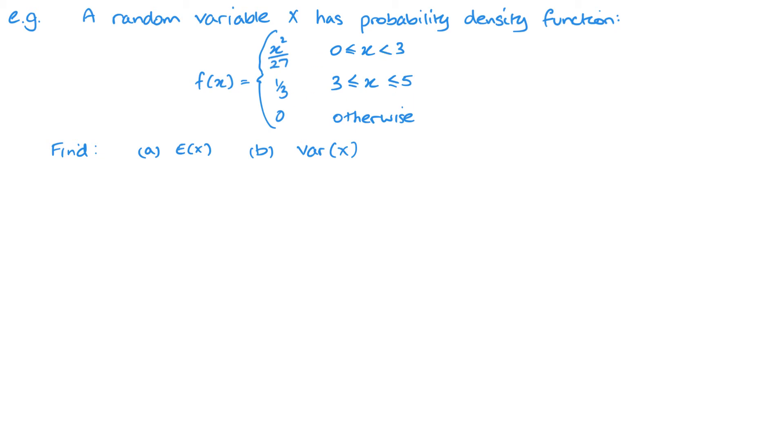Now final example. I wanted to make sure that I did a piecewise function so that you knew what to do when you had your two separate functions, and it is actually very straightforward. If I want to find my E of x, my expected value, my mean, all I need to do is integrate, but also remembering to multiply by x each term. This is going to be x cubed over 27 between 3 and 0.